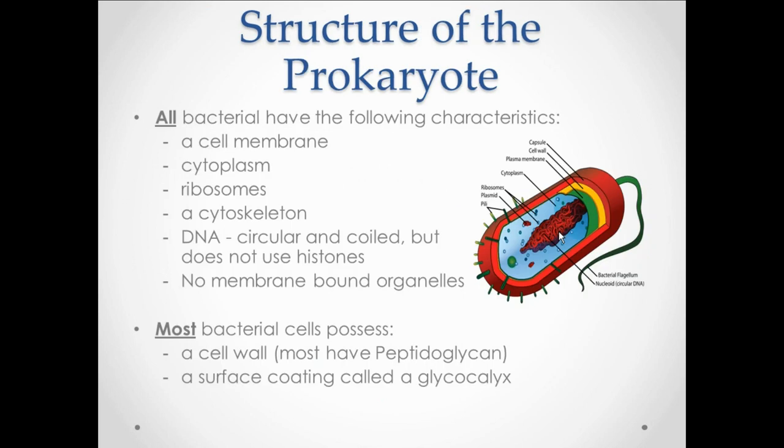So we've been through all of the bacterial structures and their functions. Now we need to, as a recap, go through and define which of those structures are found on all bacteria and which ones you will see on most or a few. To begin with, all bacterial cells will have the following structures. All are going to have that cell or plasma membrane. All bacteria must have cytoplasm and ribosomes. Bacteria are going to have the cytoskeletal structures and DNA. One thing to point out about the DNA is that although it's circular and coiled, it does not use histones such as eukaryotic cells do. And again, to point out, no bacterial cell will contain organelles or those membrane bound structures.